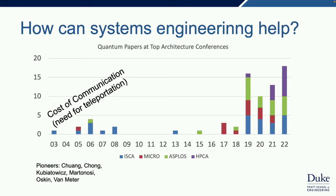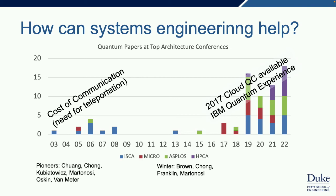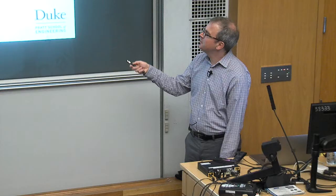That early period was really about the cost of communication and recognized the need for using teleportation to get information around. During the first quantum winter there were basically two papers, including myself, Fred Chong, Diana Franklin, and Margaret Martonosi. Then in 2017, IBM made these first computers available on the cloud, and since then there's been remarkable growth in people looking at how to architect and control these real devices.